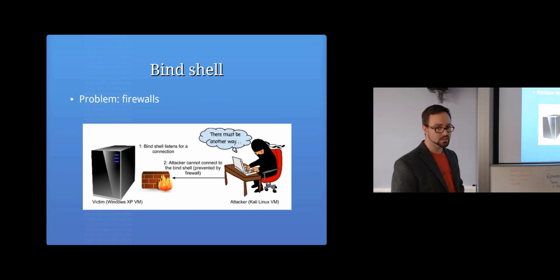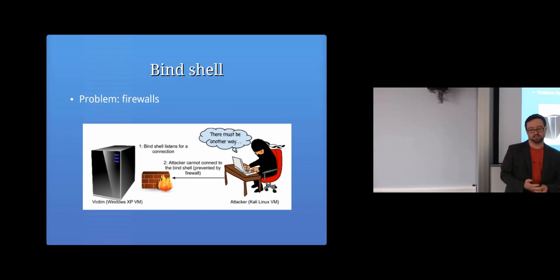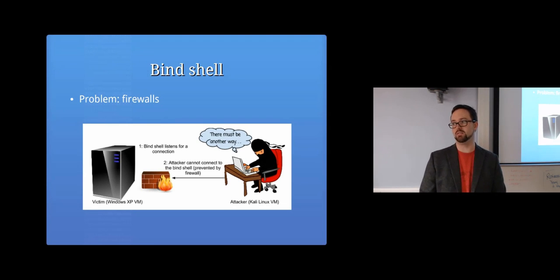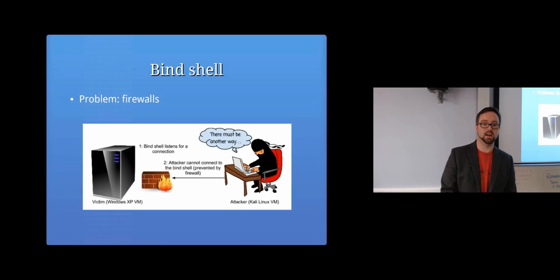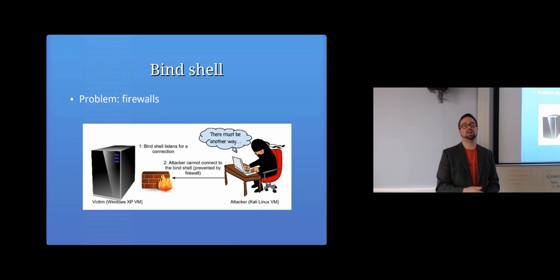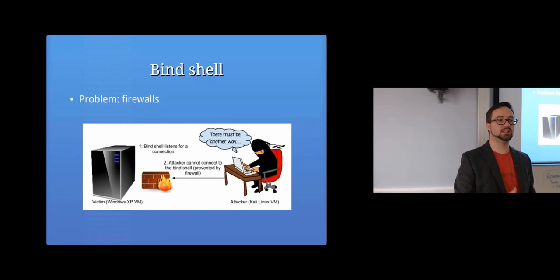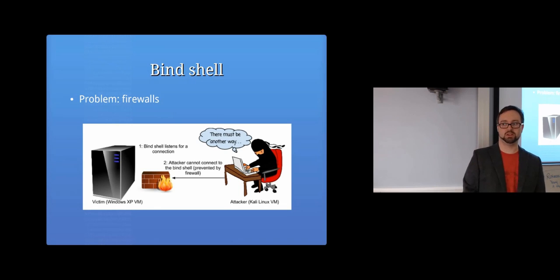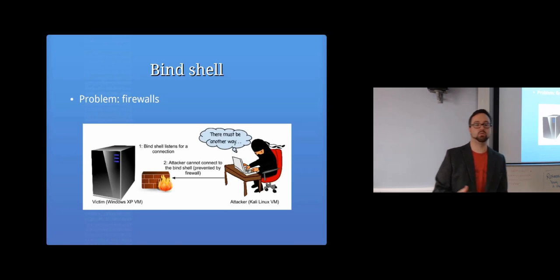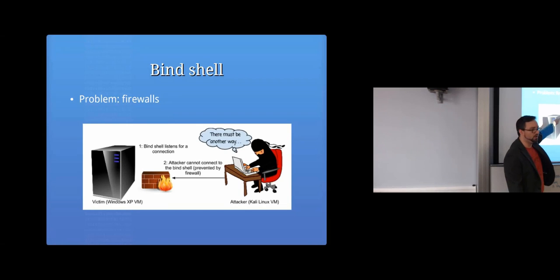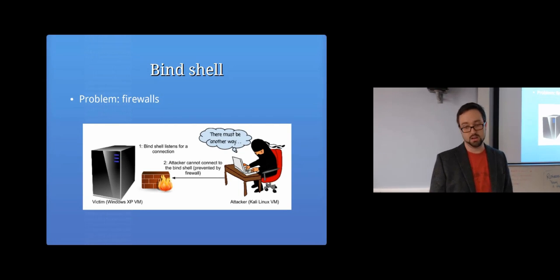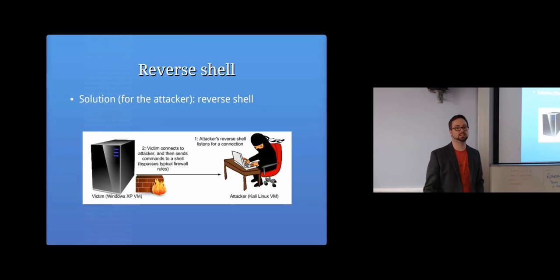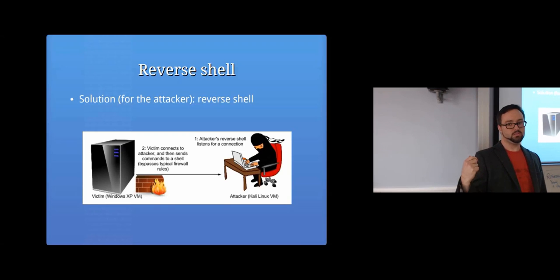A firewall is the answer. That solution worked fine before firewalls were commonplace, but nowadays a firewall is usually in place. At a minimum, a firewall typically accepts connections established outbound but tightly controls incoming connections that weren't requested. So if the attacker spawns a bind shell and tries to connect in, they'll hit the firewall and won't be able to connect to that computer.